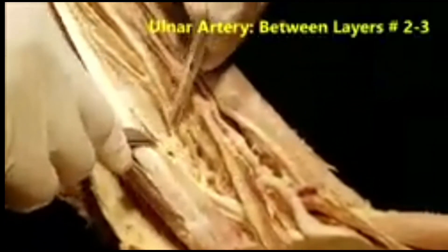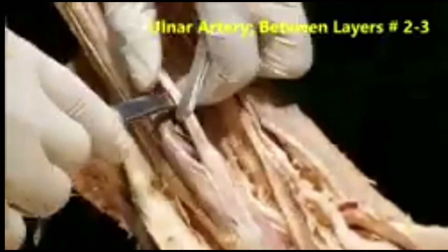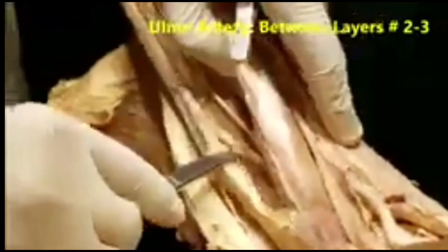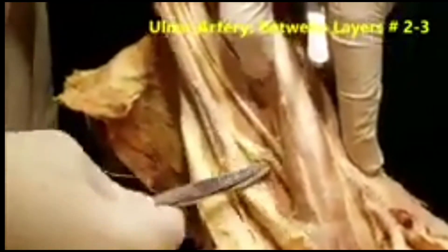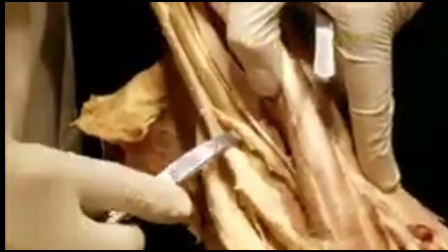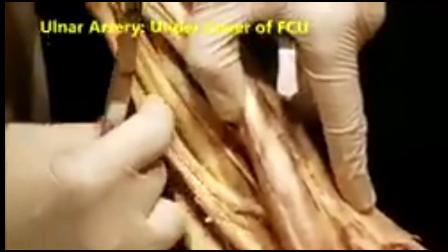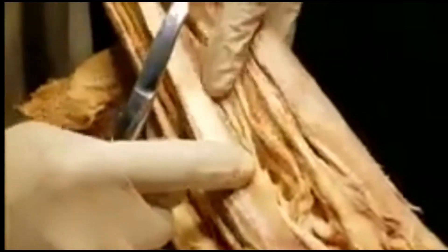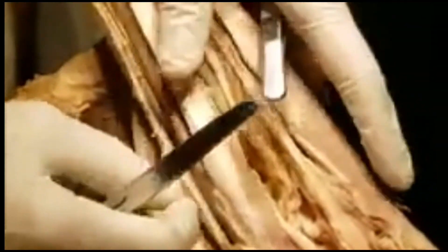It goes deep and continues between layers 2 and 3. This is the ulnar artery and then it comes under cover of the flexor carpi ulnaris. That's the course of the ulnar and the radial artery.